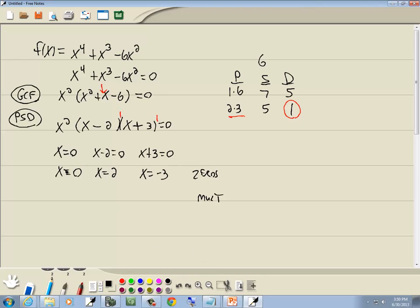So our multiplicity for the x equals 0 would be 2. For x equals 2 would be 1, and for x equals negative 3 would be 1. So it's whatever your exponents are up here.